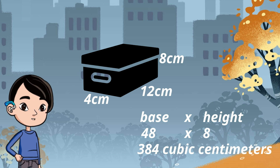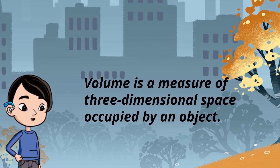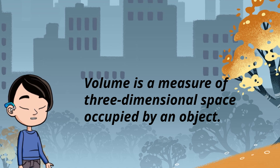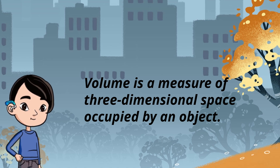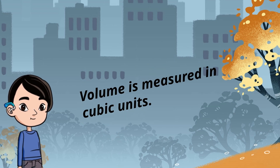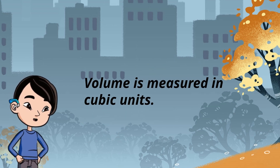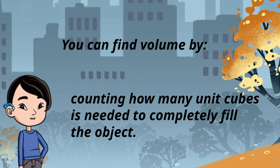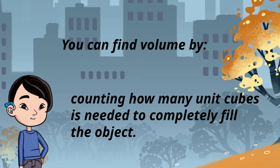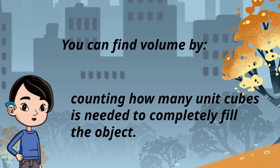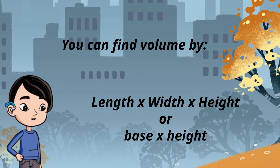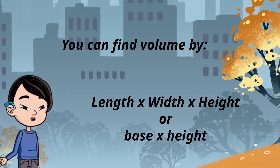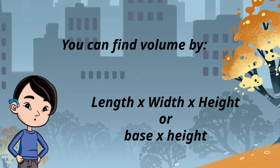Let's revise what we have learned today. Volume is a measure of three-dimensional space occupied by an object. If it can be filled up, then it has volume. Volume is measured in cubic units. You can find volume by counting how many unit cubes are needed to completely fill the object, or by multiplying length times width times height, or base times height. Thanks for watching.